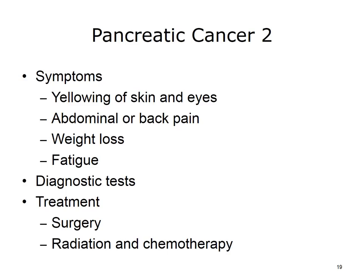Pancreatic cancer is hard to catch early because it doesn't cause symptoms right away. When symptoms do appear, they are often vague and include yellowing of the skin and eyes, pain in the abdomen and back, weight loss, and fatigue. Because the pancreas is hidden behind other organs, health care providers cannot see or feel the tumors during routine exams. Because it is often found late and spreads quickly, pancreatic cancer can be hard to treat. Each type of tumor has different symptoms, and possible treatments include surgery, radiation, and chemotherapy, determined by the stage of the cancer.